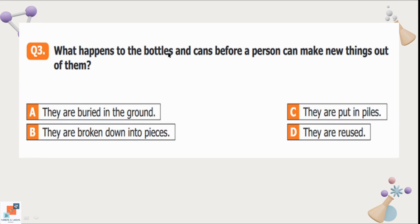Question number 3: What happens to the bottles and cans before a person can make new things out of them? Option A is they are buried in the ground. Option B is they are broken down into pieces. C is they are put in piles. And option D is they are reused. Recycling companies whenever they have to recycle something they have to reshape it. So before reshaping they break down the things into pieces and then make new shapes out of it. So we can reuse the new objects. Option B is the correct option.